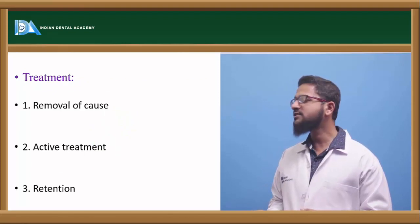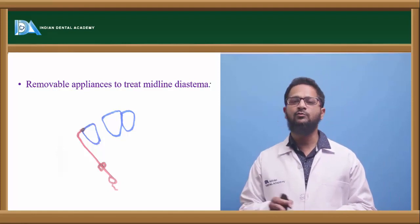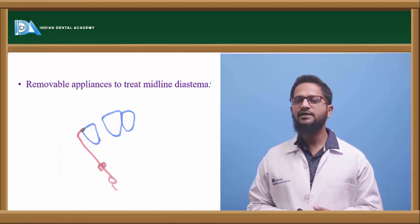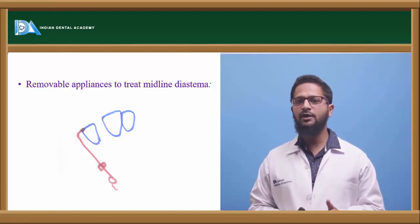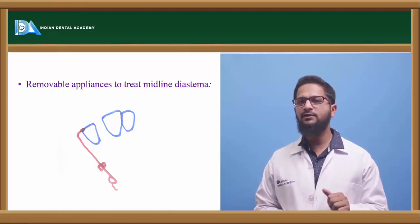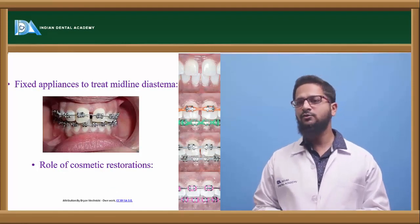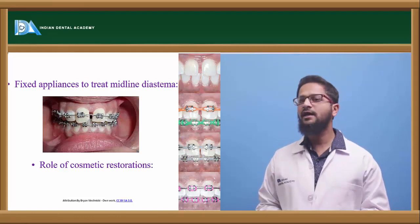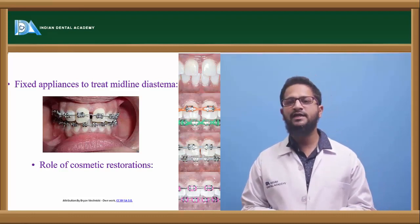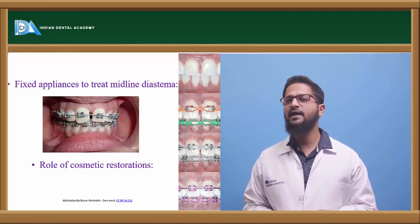Third is active treatment, and the fourth is retention. Active treatment can be done by using removable appliances or fixed appliances. Removable appliances most commonly used are finger springs, which can be incorporated in removable Hawley appliance. With continuous action of the removable appliance, the space between the two central incisors can be closed. Various types of elastics can also be used. But fixed appliances seem to be more effective — along with fixed appliance, E-chain or tight ligature wire can be used. These will help to close this midline diastema.